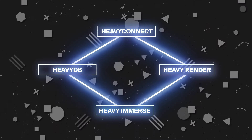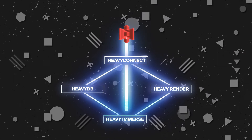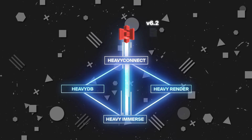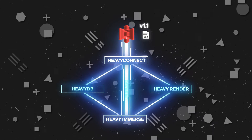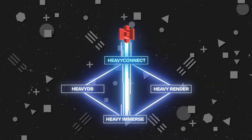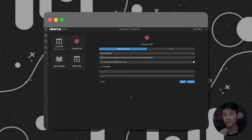Heavy Connect is a brand new component to Heavy.ai, which allows you to link external data sets continually. This lets you update and refresh from the linked data source without needing to duplicate or re-ingest your data into HeavyDB every single time there's an update. This is a massive quality of life change that's meant to provide you with the same level of interactivity while saving you tons of clicks and tons of time.